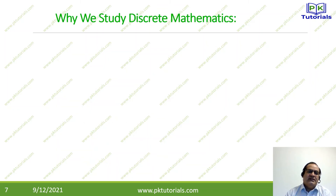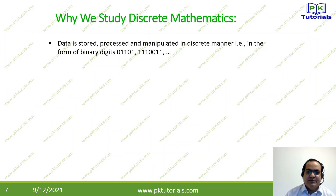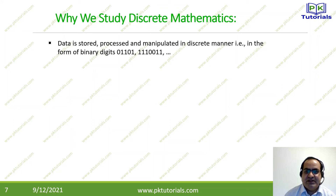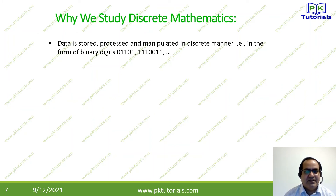Another question is: why do we study discrete mathematics in computer science? Because in computer science, data is stored, processed, and manipulated in a discrete manner — in the form of binary digits, on or off, 0 and 1. That is countable, and that is why we study discrete mathematics.